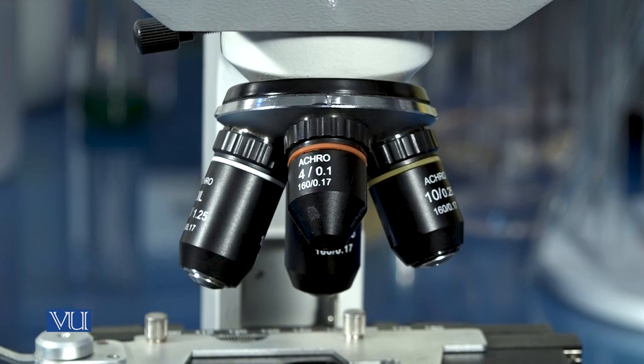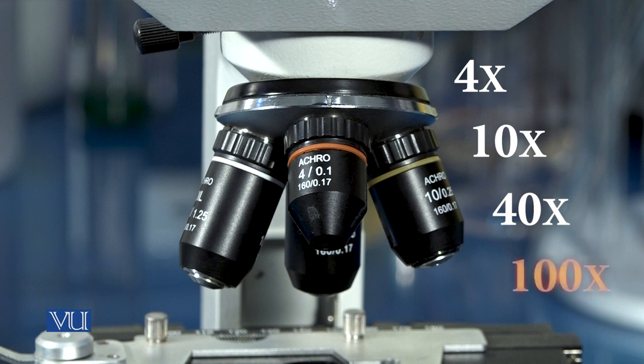A compound microscope usually has four objective lenses with magnifications of 4x, 10x, 40x, and 100x.